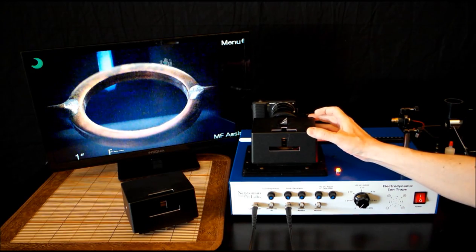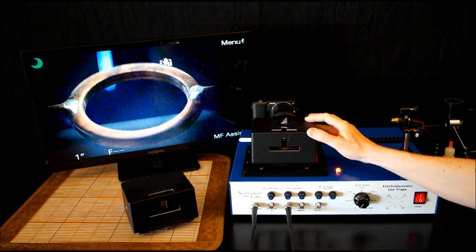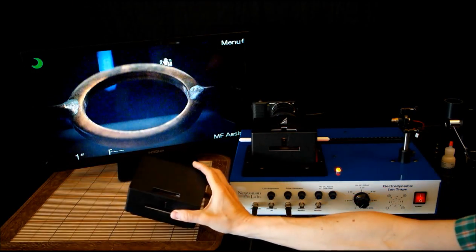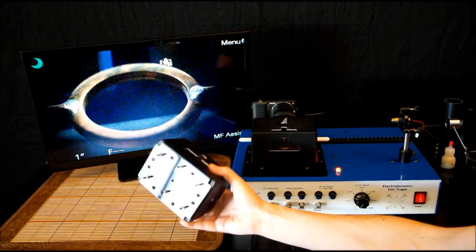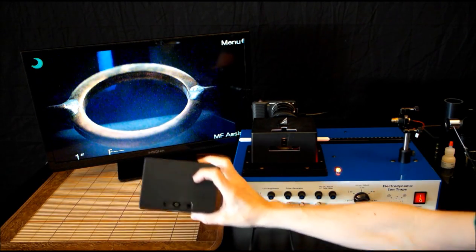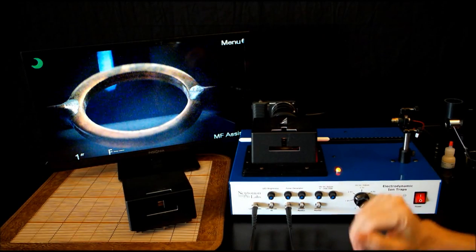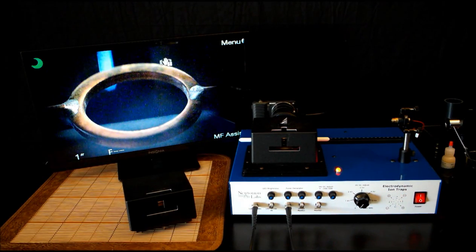We have one of the trap boxes here. This has the ring trap inside. Here's another one, another similar trap box. So we have three of these that come with the instrument and they have banana plugs on the bottom and they plug into the main chassis so we can drive each of the three traps from the chassis here.